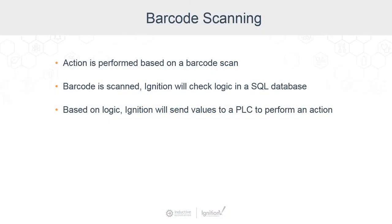There are many applications that will use barcodes to help identify products or items within a system. When you scan that barcode, that is an event — a trigger that is going to happen. A value is going to change and a transaction group can be monitoring that tag. When that tag changes, we can perform some logic and check back with the SQL database to know what to do.